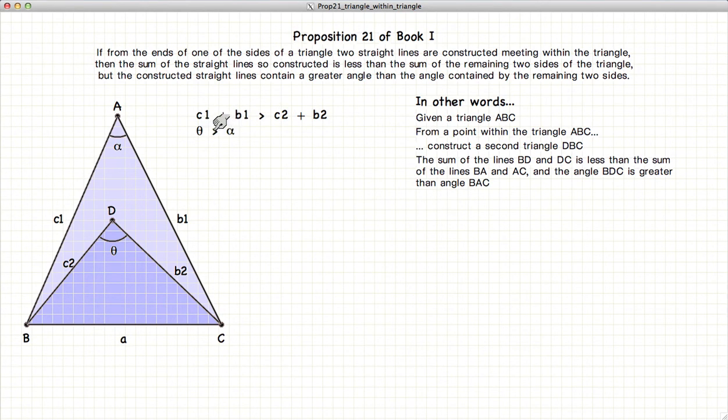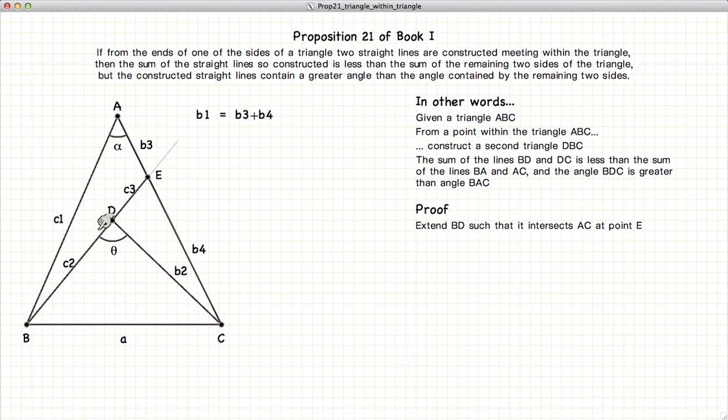So let's continue. First, we extend the line BD such that it crosses AC at point E.